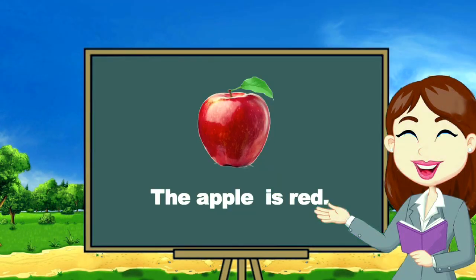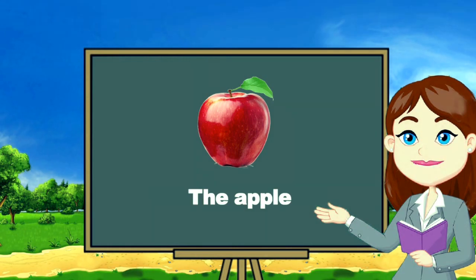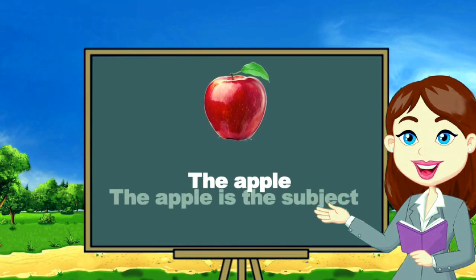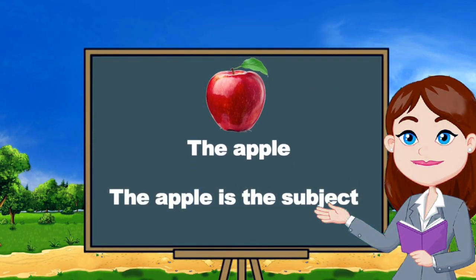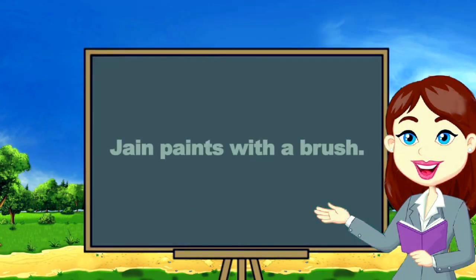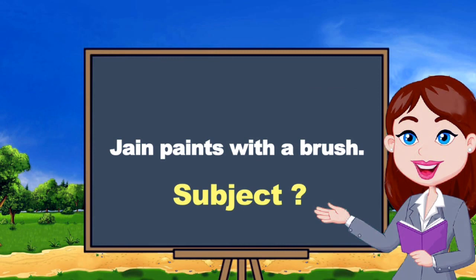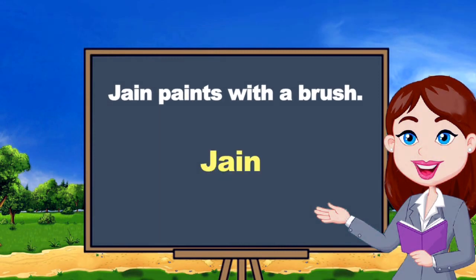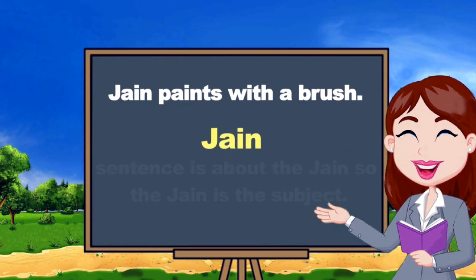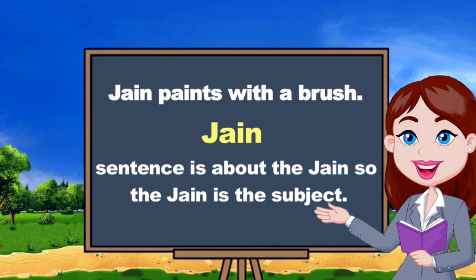Let's see another example: 'The apple is red.' Can you guess what the subject is in this sentence? That's right — the apple. The apple is the subject because the sentence is about the apple. Let's try one more: 'Jane paints with a brush.' The sentence is about Jane, so Jane is the subject.